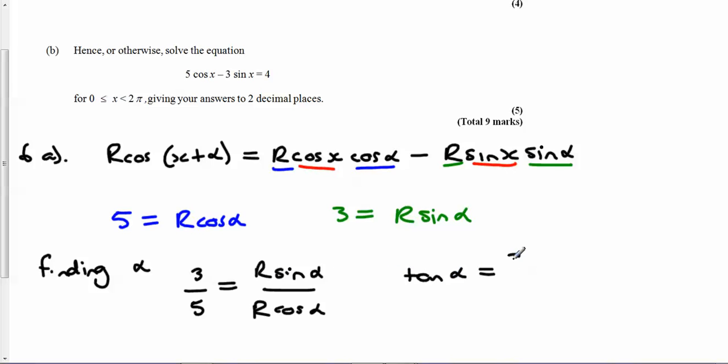And that means that alpha comes out to be, in radians, 0.540419 and so on.